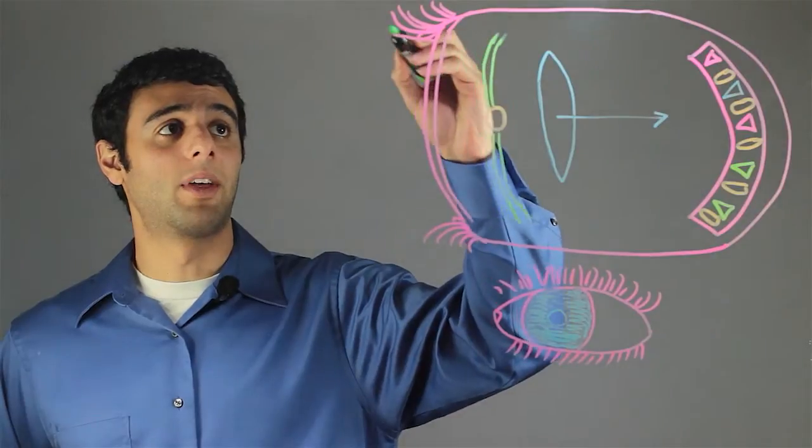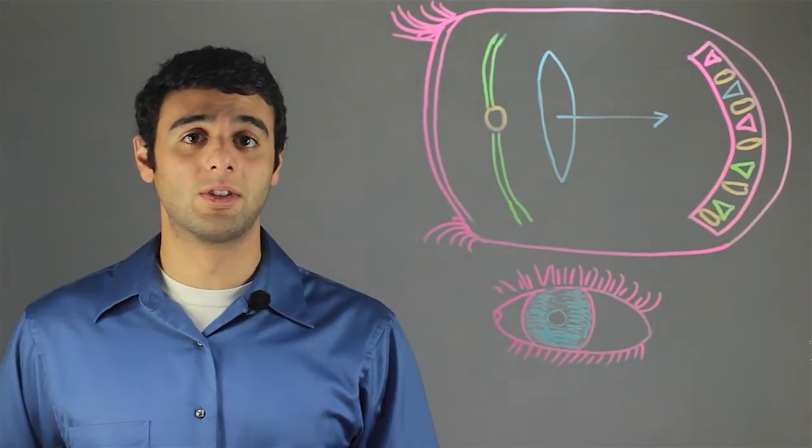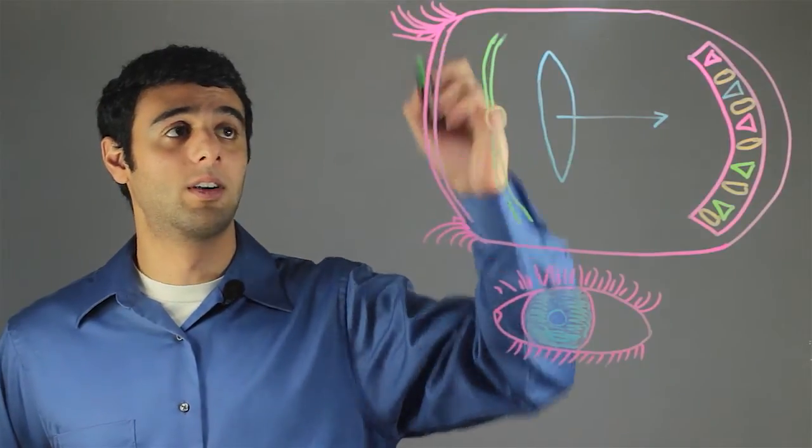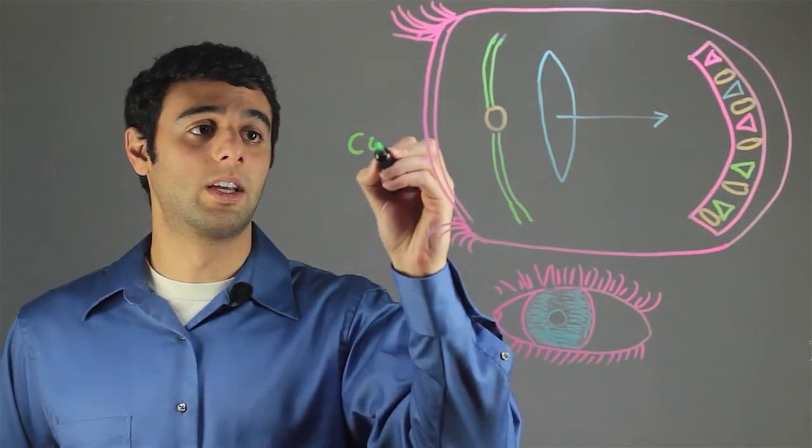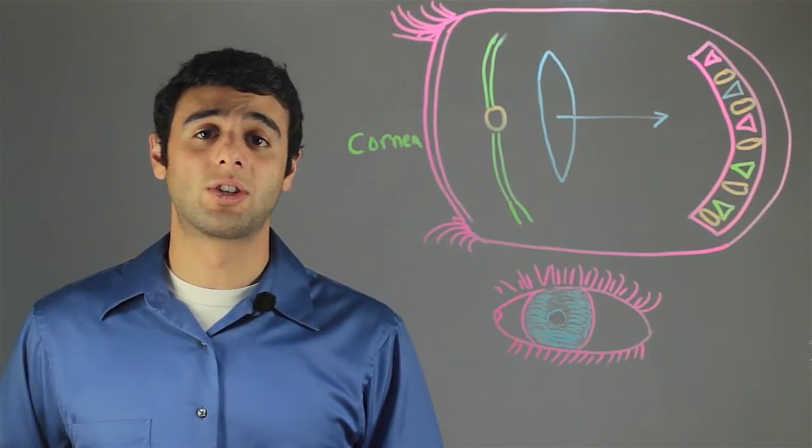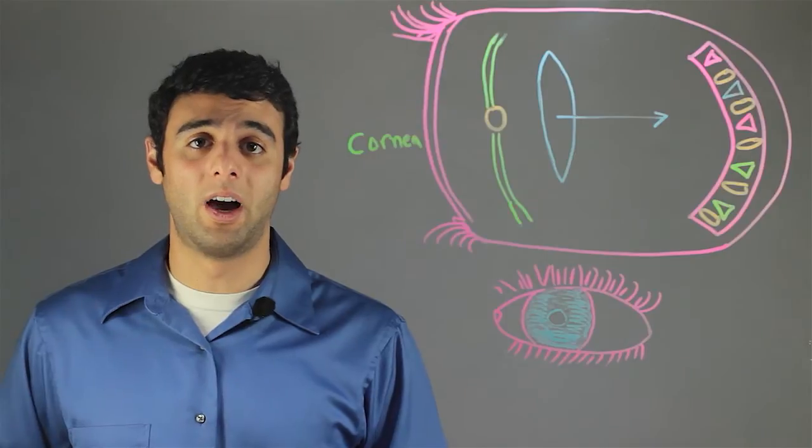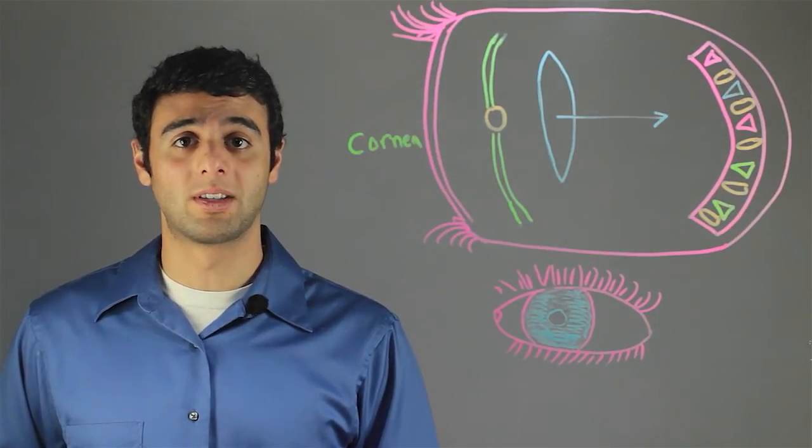Here we have the eyelashes, which are not actually part of the eyeball but just a protective part on the skin around it. The first thing here is the cornea. The cornea is the transparent outer layer of the eye that first collects the light and begins the focusing process.